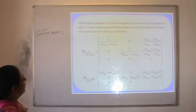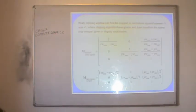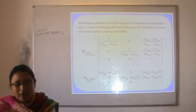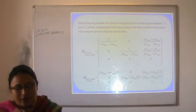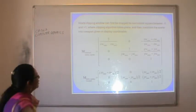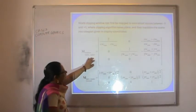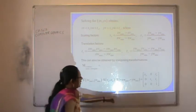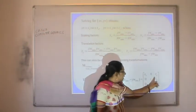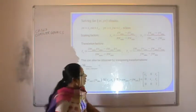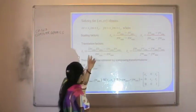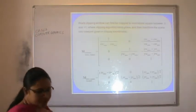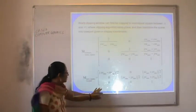A clipping window can first be mapped to a normalized square between -1 and +1, where the clipping algorithm takes place, and then transform the scene into the viewport given in display coordinates. We apply the scaling factors sx, sy and translation factors tx, ty from the matrix, and then after following this matrix we get the final result.